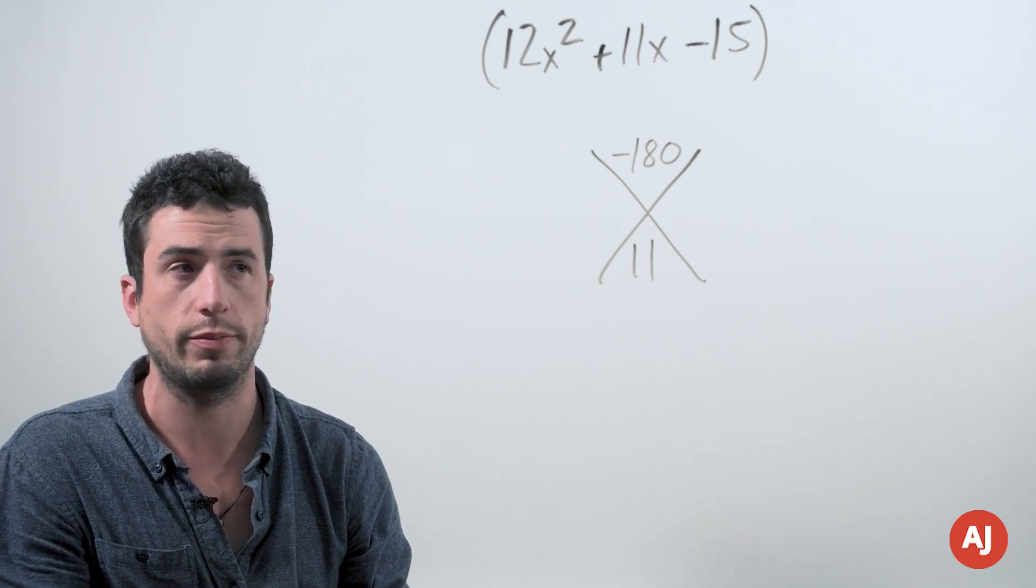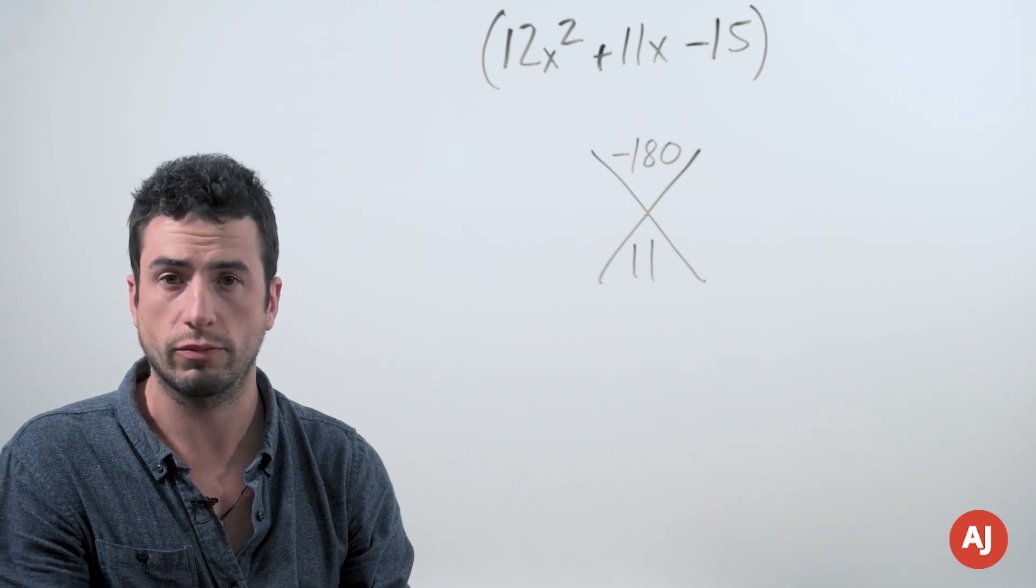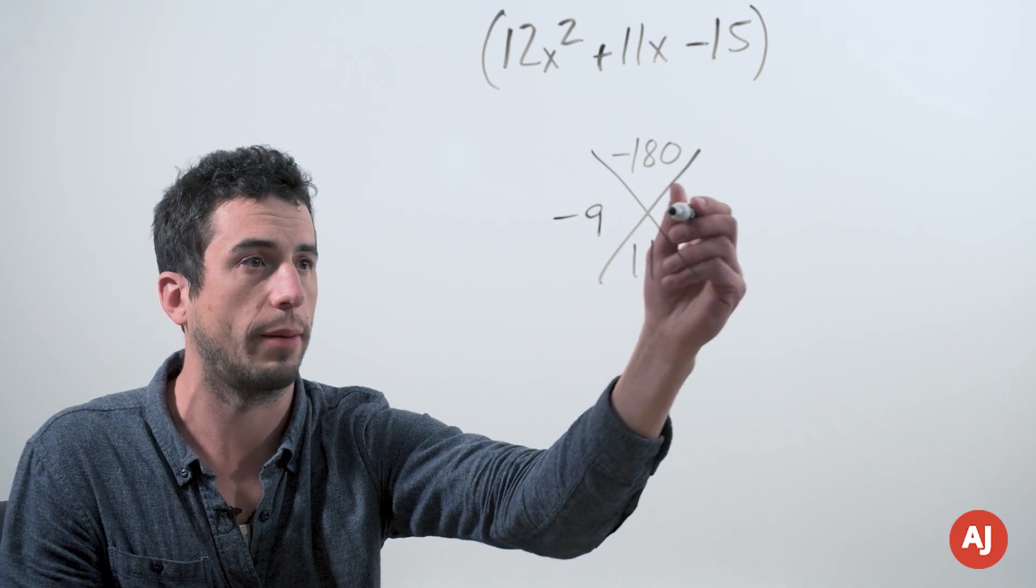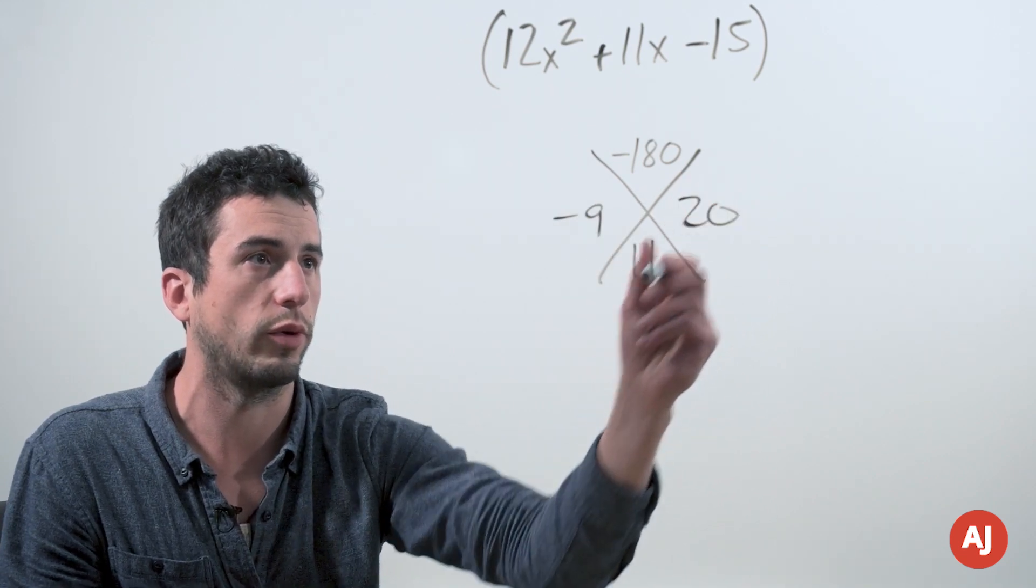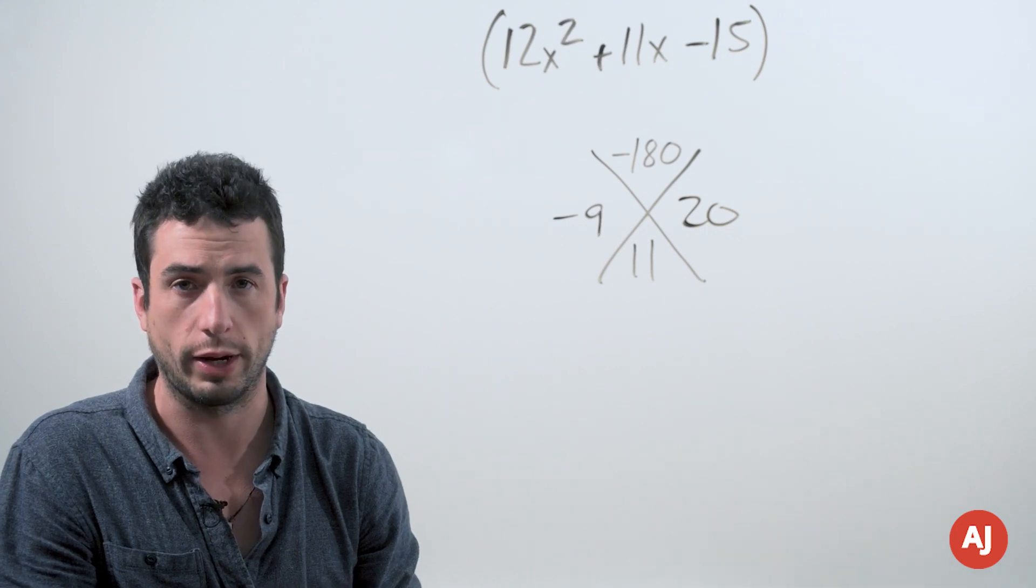Now 10 and 18 is an obvious one, but that doesn't add to 11 unfortunately. 9 and 20, right next to that, that looks pretty good. So if we go with a minus 9 and a positive 20, those will in fact add to positive 11 and multiply to negative 180.